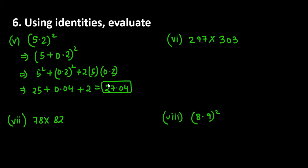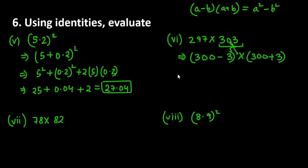Let's move on to the 6th part. 297 you can write as 300 minus 3, and 303 as 300 plus 3. This form is a minus b, a plus b because the number is the same, just the sign is different. We simplify this as a square minus b square. 300 square minus 3 square. 300 square is 90000, 3 square is 9, so the answer is 89991.